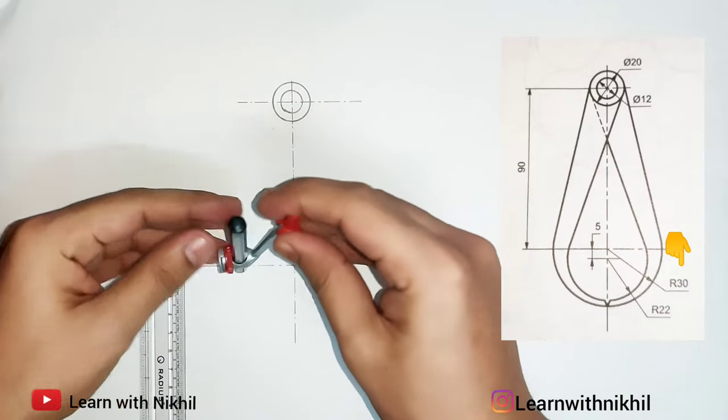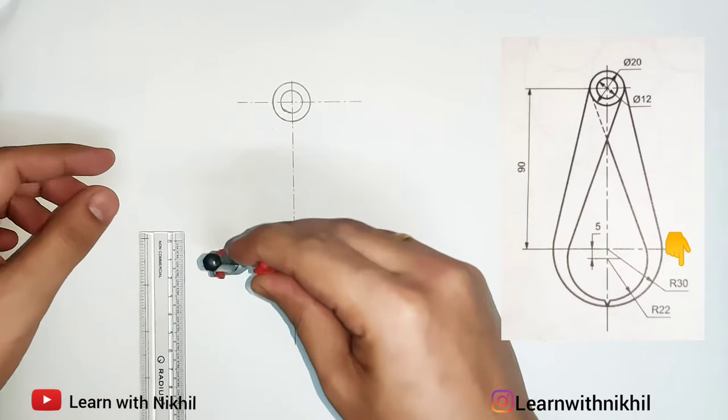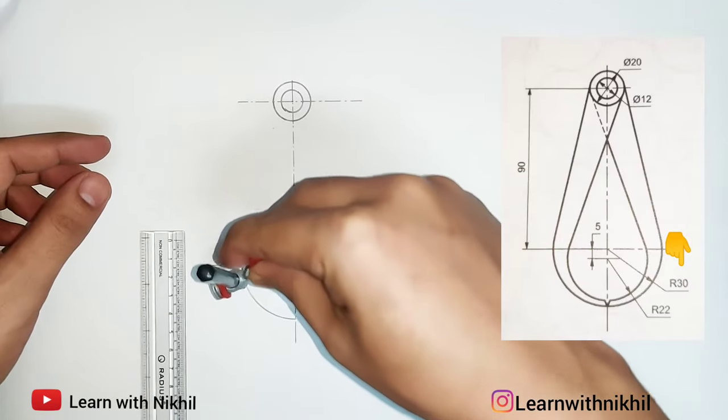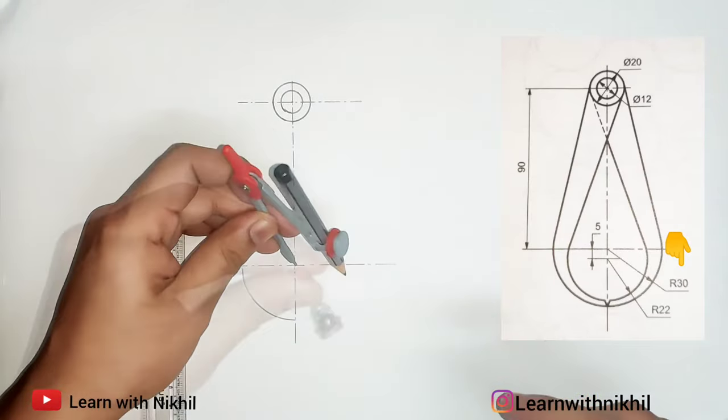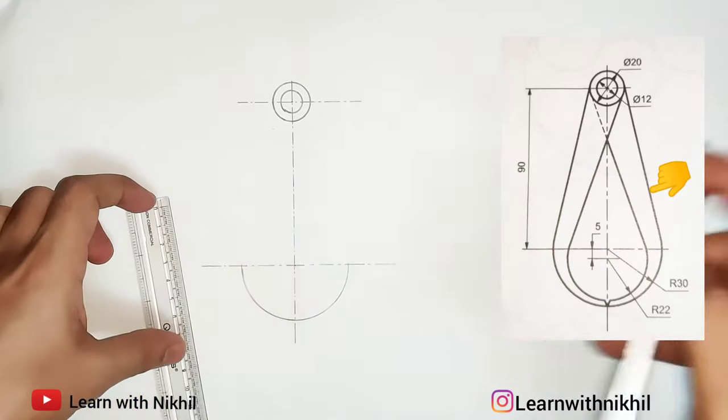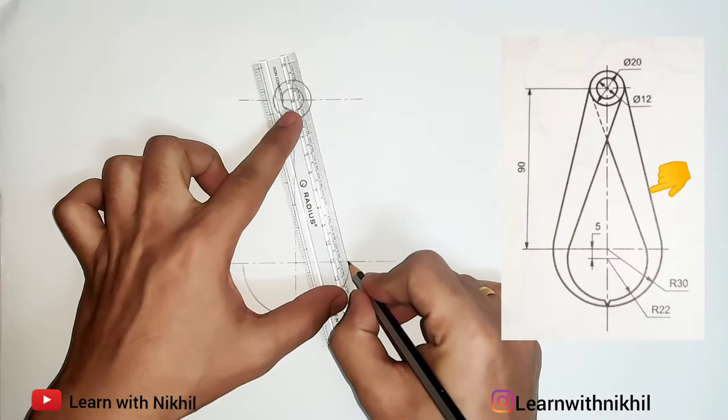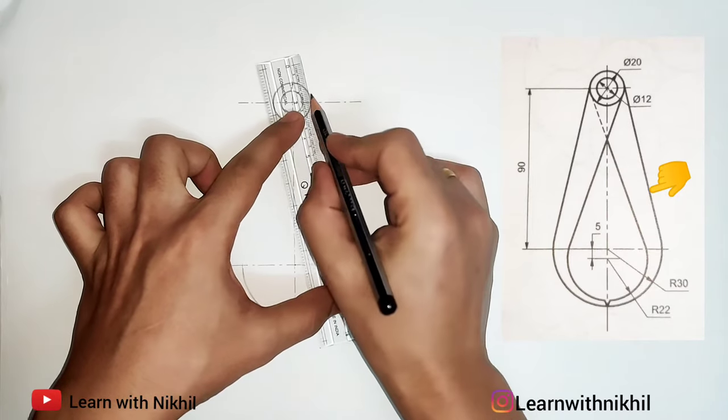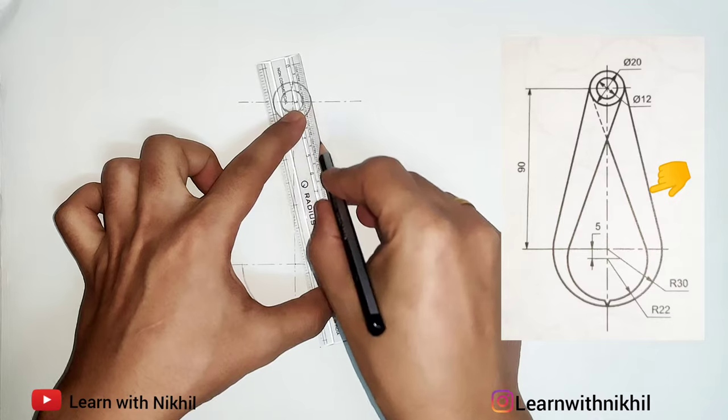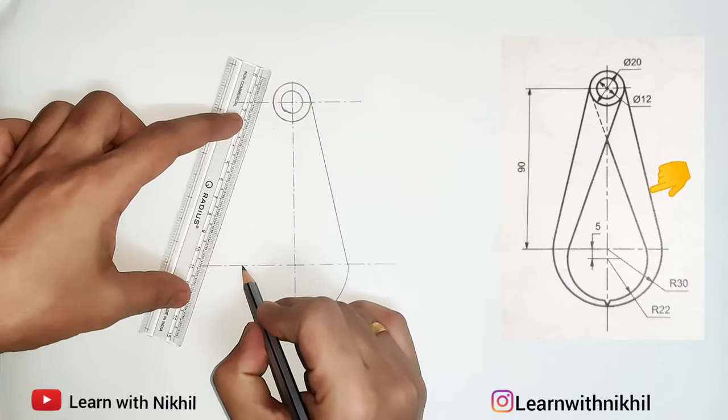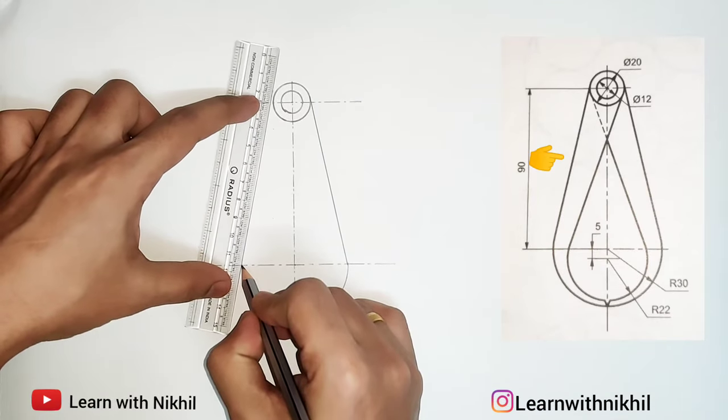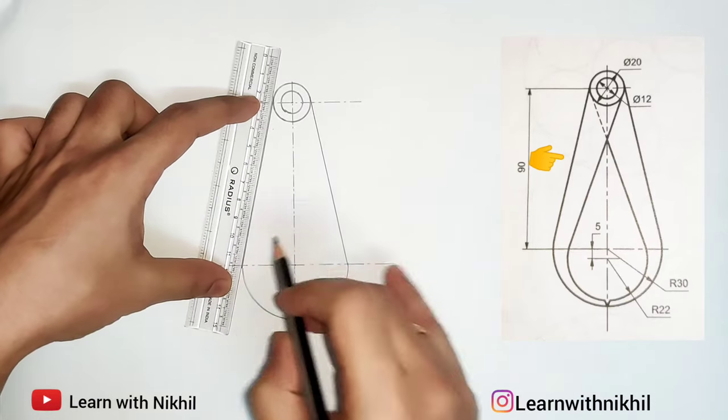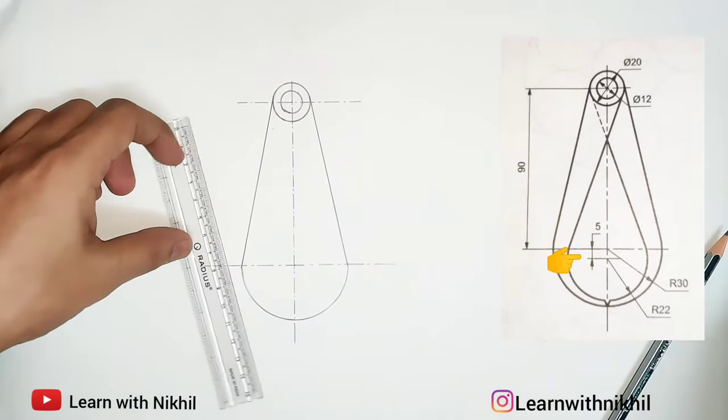So on compass I have taken radius of 30, keep the pointer here and draw the semicircle. Now you have to join a tangent to this circle. See how I am aligning the scale—mark the tangent point and draw the line. Same on this side, see how I have aligned the scale. You'll get a single point on the circle. Draw a dark line, so these two lines have been drawn.